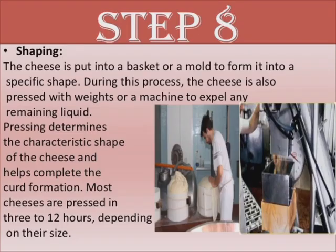The eighth step is shaping. The cheese is put into a basket or a mold to form it into a specific shape. During this process, the cheese is also pressed with weights or a machine to expel any remaining liquid. Pressing determines the characteristic shape of the cheese and helps complete the curd formation. Most cheeses are pressed in 3 to 12 hours depending on their size.